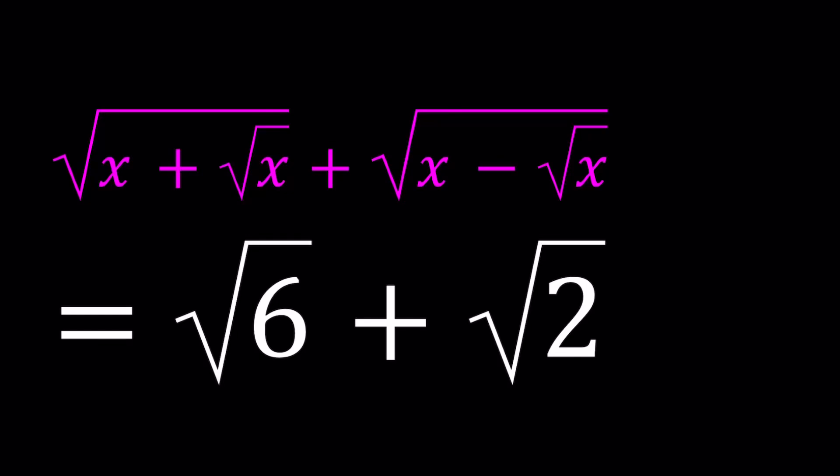Hello everyone. In this video we're going to be solving a radical equation. We have square root of x plus square root of x plus the square root of x minus the square root of x equals root 6 plus root 2. And we're going to be solving for x values.